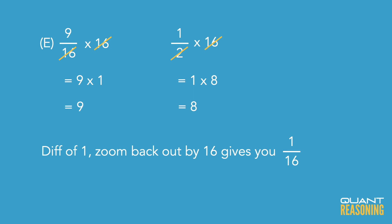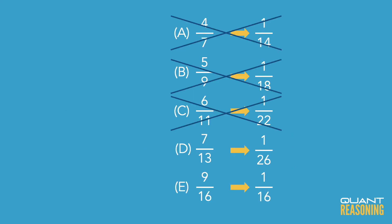So D is the correct answer because D was only one over 26 away from half. And E is a much greater distance away from half. It's one over 16. So since one over 26 is much smaller than one over 16, correct answer here is D.